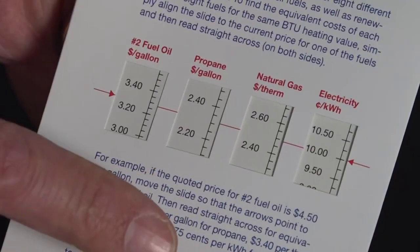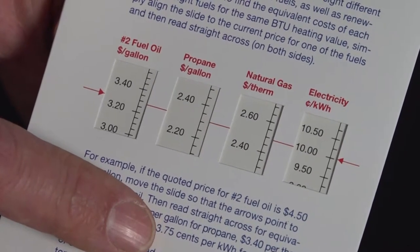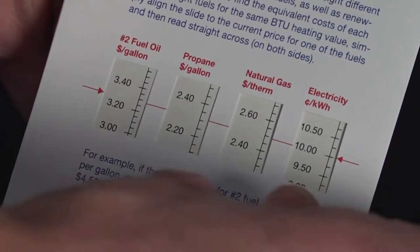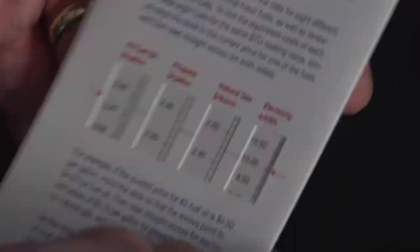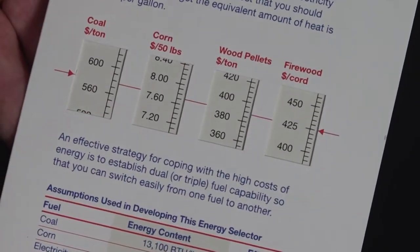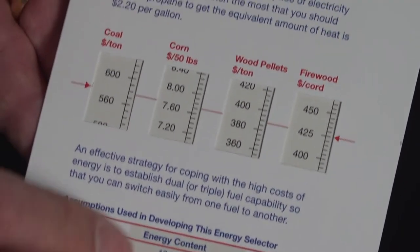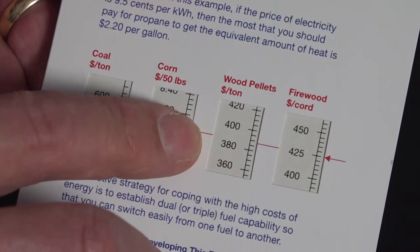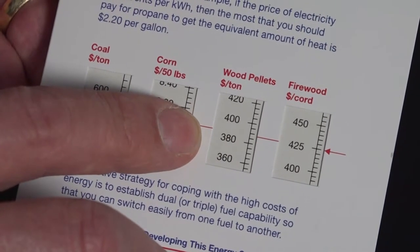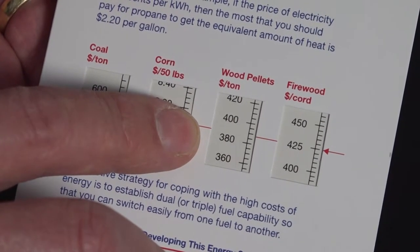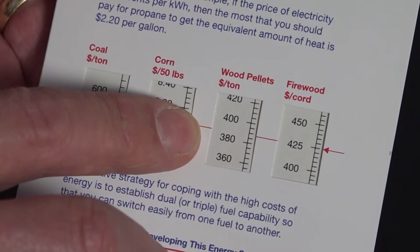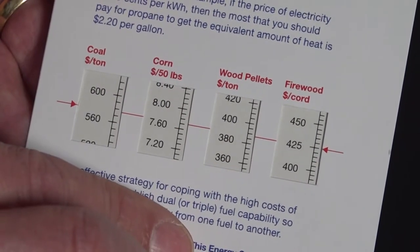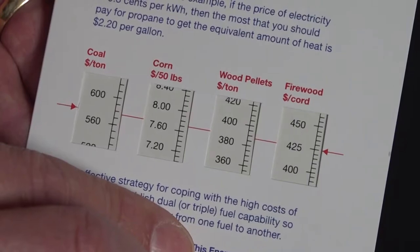Now let's take a look at the other fuel that the greenhouse grower is considering: wood pellets. When you flip over the energy selector, you see that the equivalent price of wood pellets is $390 per ton. However, the actual price of $200 per ton is much lower than the equivalent price, so at these prices, wood pellets represent a 49% savings.